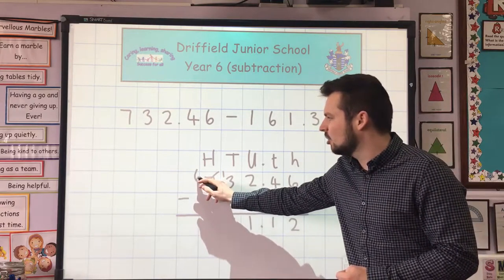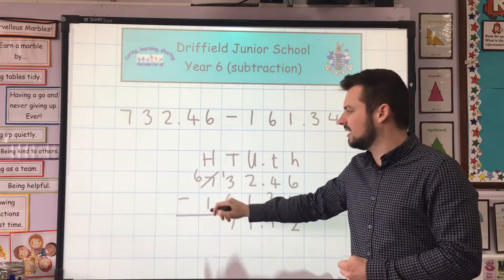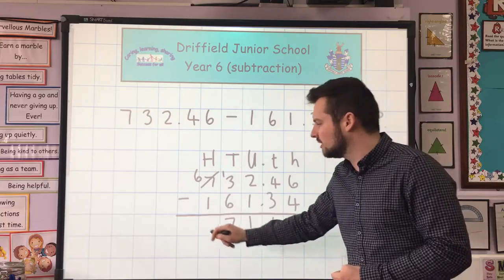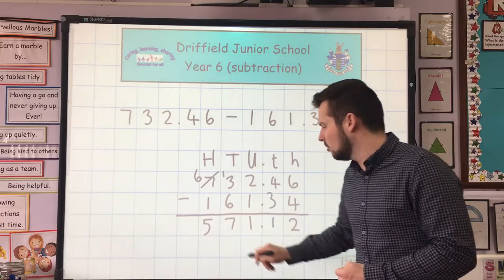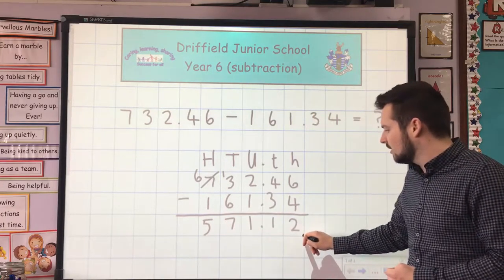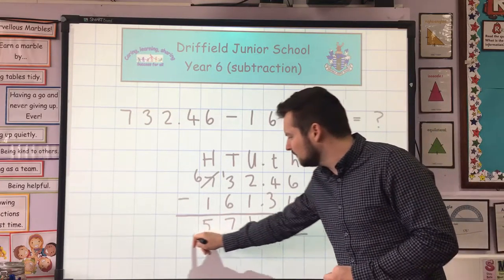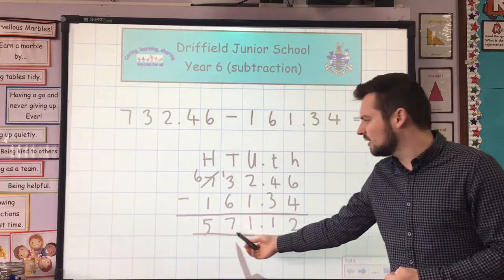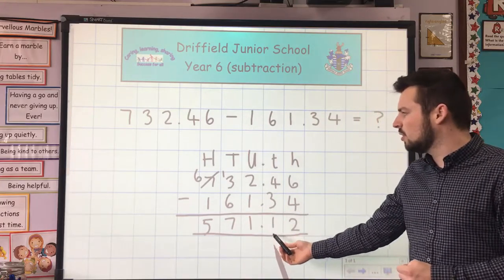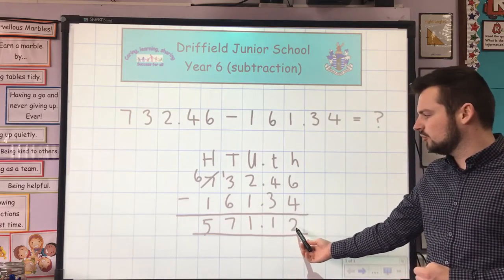And six-hundreds take away one-hundred is five-hundreds. So the answer is 571.12.